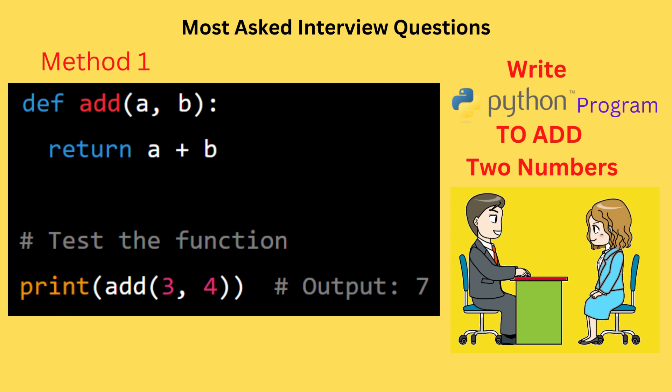This code defines a function add that takes two arguments a and b and returns their sum. The function is then tested by calling it with the arguments 3 and 4, and the result is printed to the console using the print function.